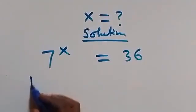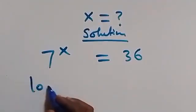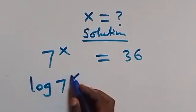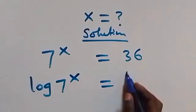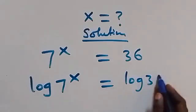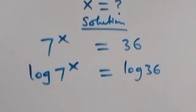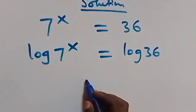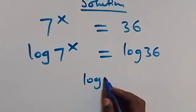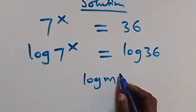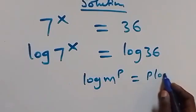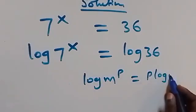That is, we have log of 7 raised to power x equals to log 36 on this side. Then from the power law of logarithm, we have log m raised to power p, which is the same thing as p log m.